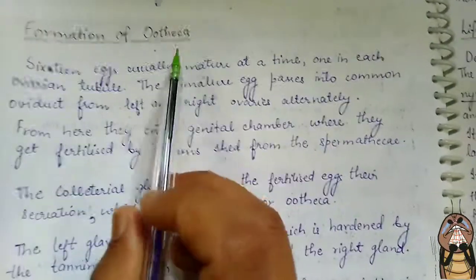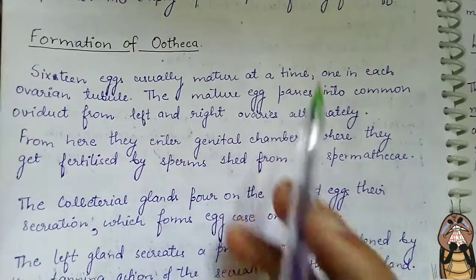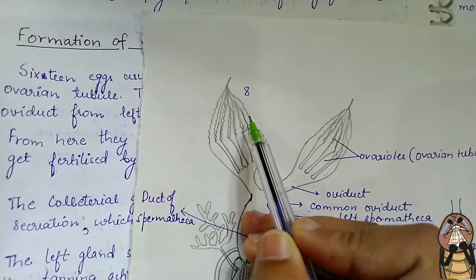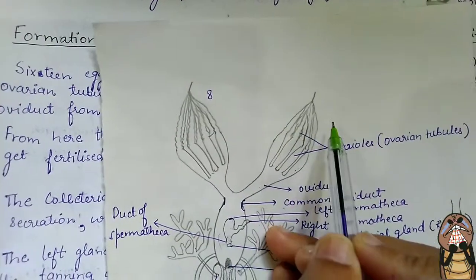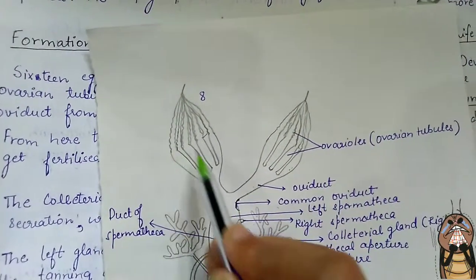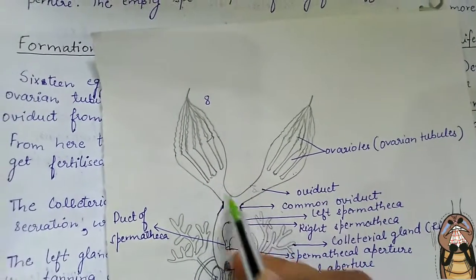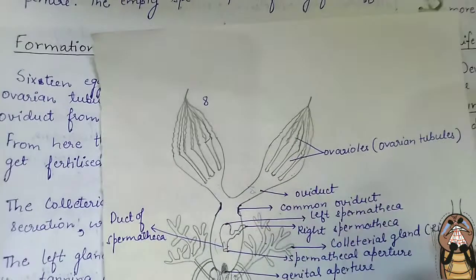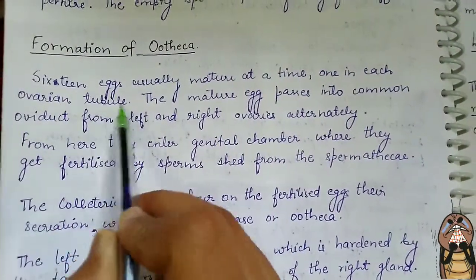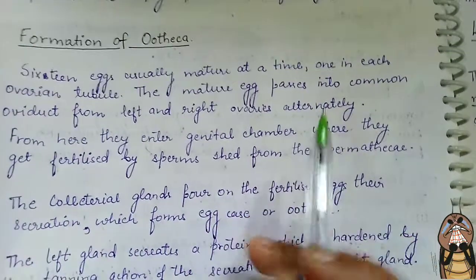The ootheca formation begins with 16 eggs usually maturing at a time. Each ovary has 8 ovarian tubules, so both ovaries together give 8 eggs each, totaling 16 eggs maturing at one time. One egg in each ovarian tubule matures and passes into the common ovarian tubules from the left and right ovaries alternately.